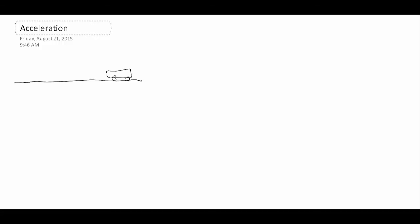Now we'll do our problem. Like always, we start by drawing a picture. Here's our road. The car starts over here — this is at T equals zero, and we know V at that point was equal to zero. I'll label these as initial. Then at some later point, the car is over here — basically when it crossed the middle of the video — and it now has some velocity, which I'll label V2.